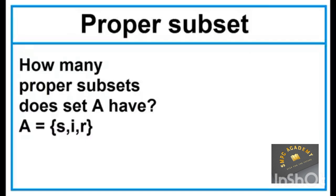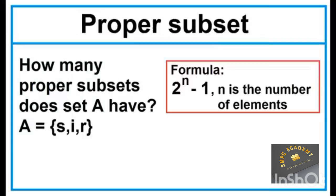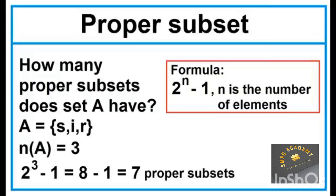Since the set itself is not a proper subset, the formula is 2 to the power of N minus 1, where N is the number of elements. The cardinality of Set A is 3, so 2 to the power of 3 minus 1 equals 8 minus 1, which is 7.